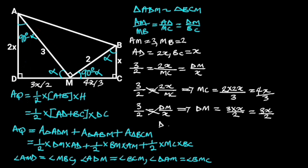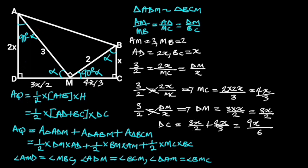DC equals DM plus MC, which is 3X over 2 plus 4X over 3. Taking the common denominator of 6: (3 times 3X) plus (2 times 4X) equals 9X plus 8X equals 17X. So DC is equal to 17X over 6.